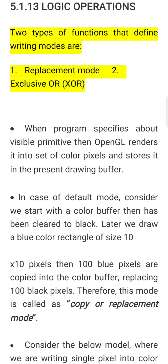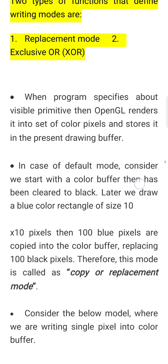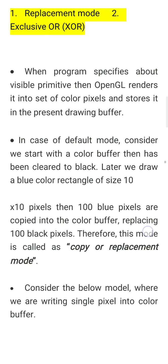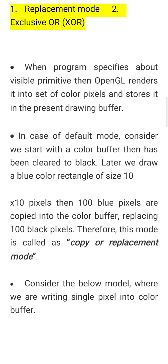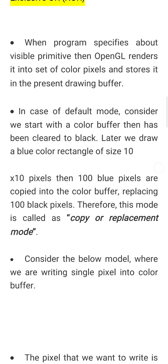When a program specifies a visible primitive, OpenGL renders it into a set of color pixels and stores it in a drawing buffer. Recall the buffering concept: a frame buffer has two separate units — one is a drawing buffer and the other is the rendering buffer. The rendering buffer is used for display purposes, while the drawing buffer stores what will be displayed on the screen in the next interval. In the default mode, we start with a color buffer cleared to black. Later we draw a blue color rectangle of size 10.